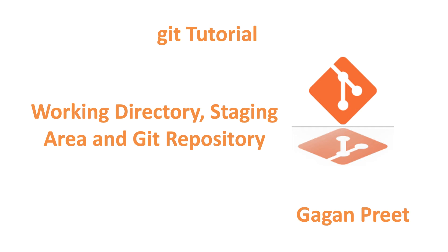Hello everyone and welcome back. In this session we'll discuss working directories, staging area, and git repository. As we've seen previously, we tried to add some objects in the git repository — that's the last step when you push or add something to the git repository where it is saved. We've seen how to add a blob object and a tree object, and also the mapping in a tree object where you can have file names and blobs as well as trees under a single tree object. That was covered in the previous video — please check it for more details.